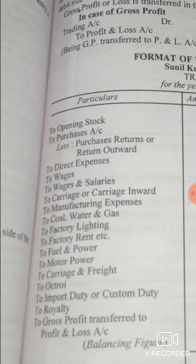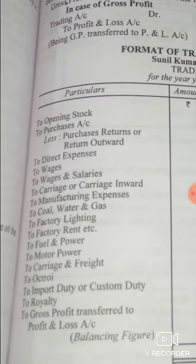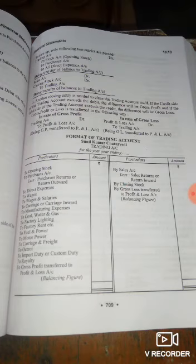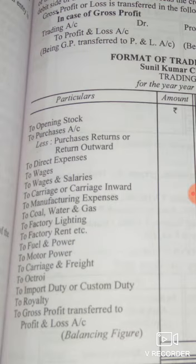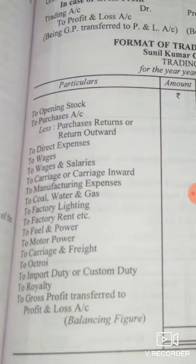On the debit side, it starts with opening stock, then purchases — to find net purchases you subtract purchase return or return outward from purchases. After that, all the expenses which are directly related to production, or expenses incurred in the factory, are written in the trading account. No post-production expenditure will be included; only expenses without which production is not possible at all are shown here.